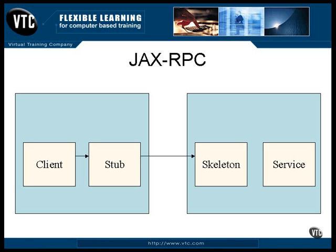In the world of web services, the skeleton is often called the tie because it's used to tie the client to the web service. But the traditional RPC term is skeleton. The stub uses the values sent to it to make the call to a method of the service. The return value from that method is sent back to the skeleton. The skeleton, or the tie, then packages the return value as a SOAP message and returns it to the stub. The stub then converts the returned data into the form expected by the local caller and uses it as the returned argument to the client.